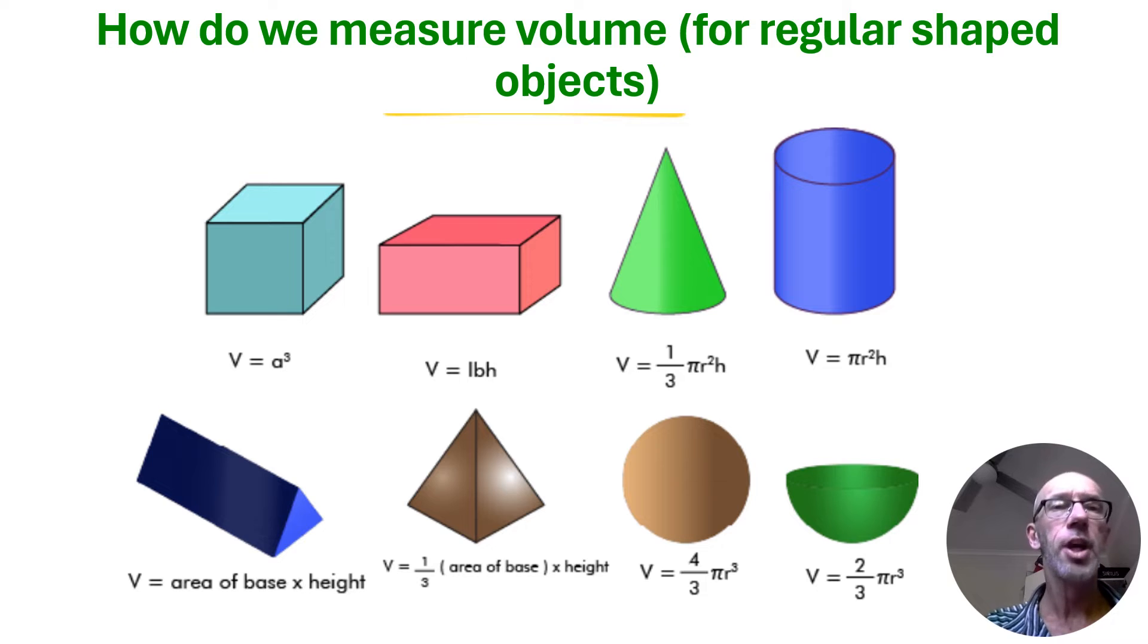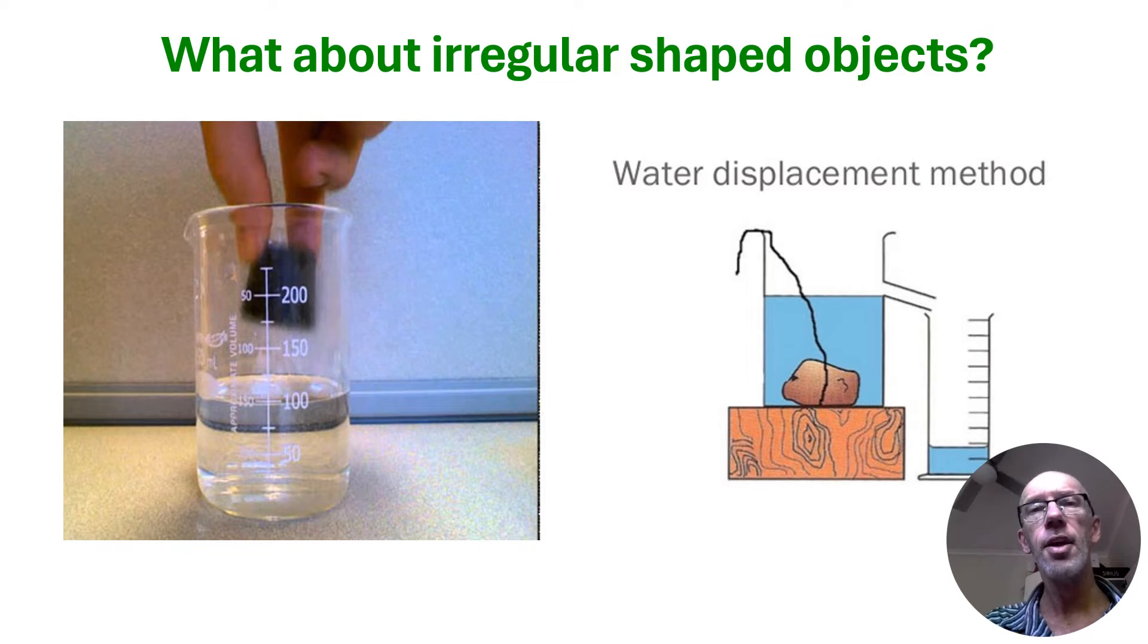For regular shaped objects, we use a formula to calculate our volume. If it's rectangular, we go with length times width by height. If there's a circular aspect to it, that brings into play pi. And if it's an irregular shaped object, then we can use the Archimedes principle, which again I outlined in one of those two clips that I referred to at the start of this vid.